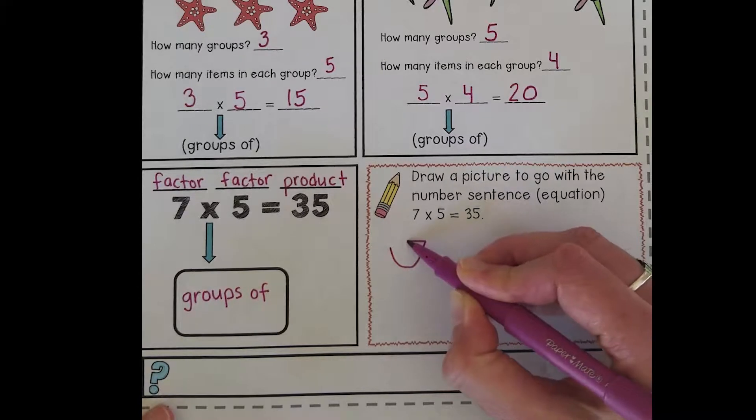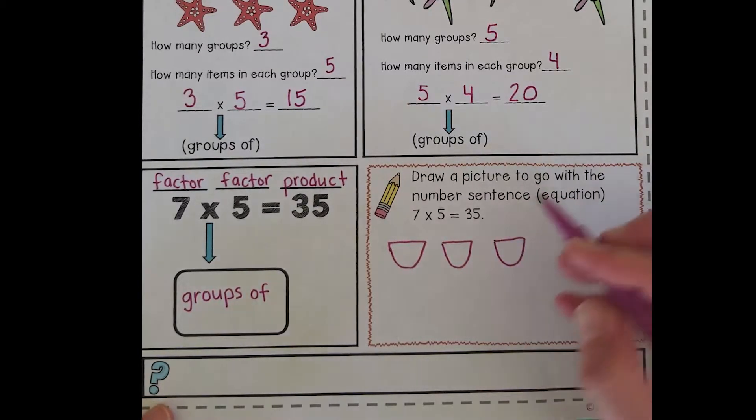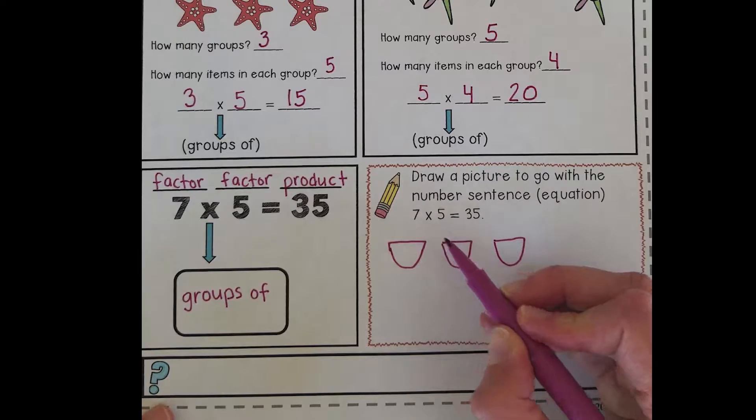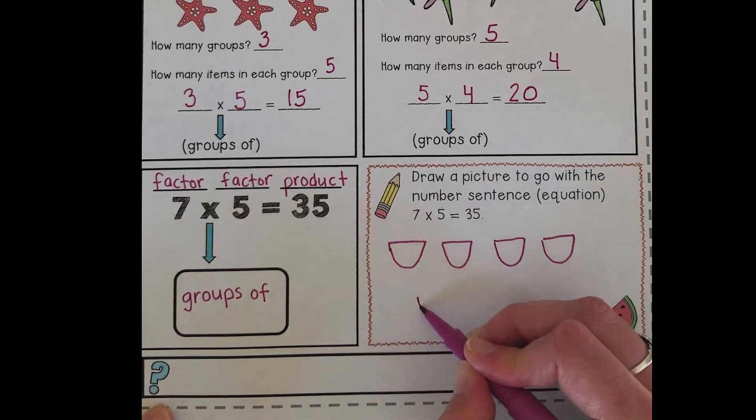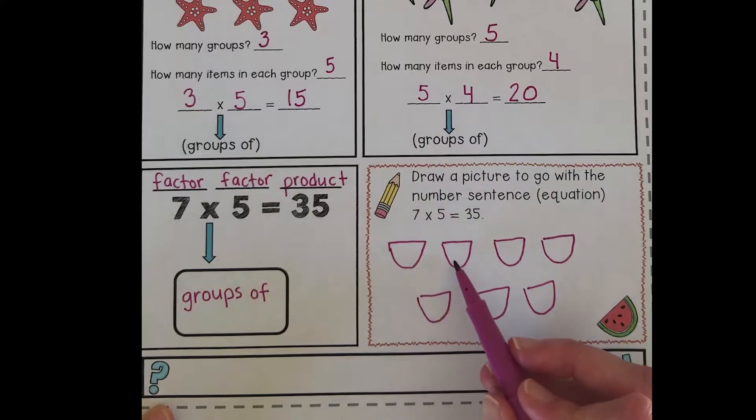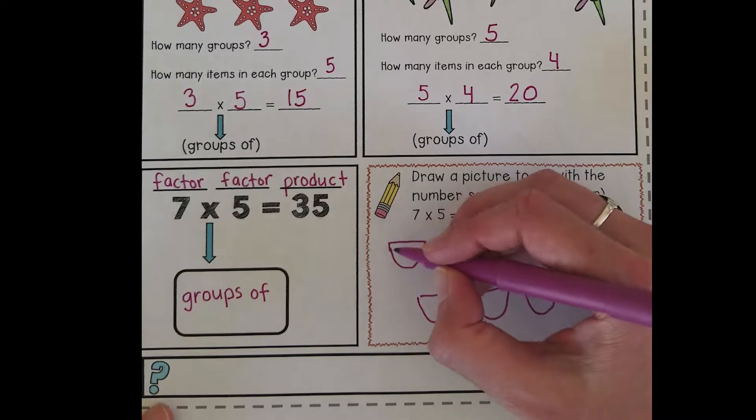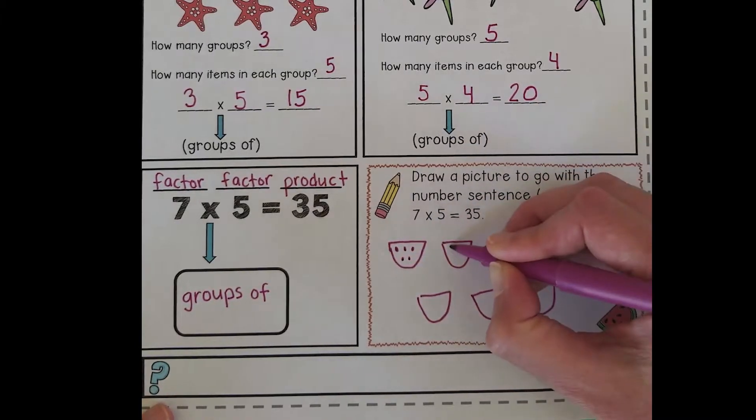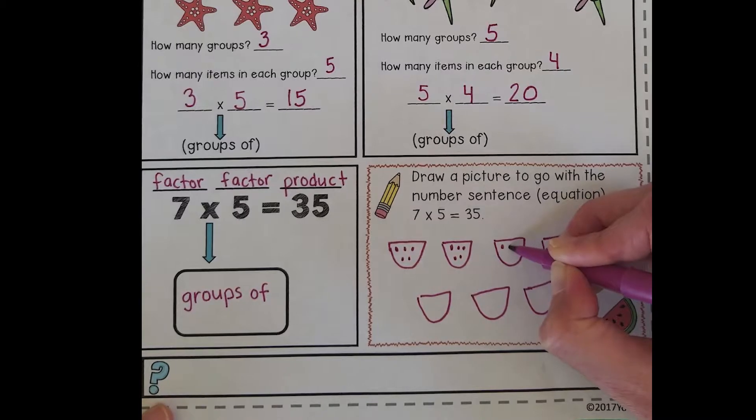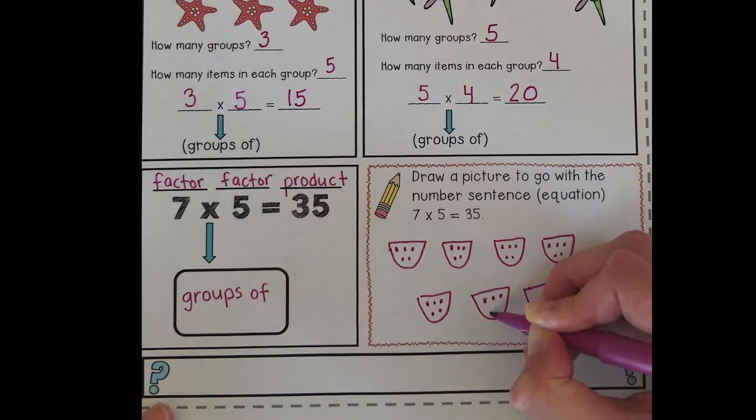Toucan and I went ahead and drew in the sand. We drew seven watermelons because we know we have seven groups of something. So I'm going to draw my seven watermelons: one, two, three, four, five, six, seven. And the nice thing about when we visualize or draw pictures from math is it doesn't have to be perfect. So I've got seven groups of five seeds, so I'm going to go ahead and draw five seeds in each of my watermelons.